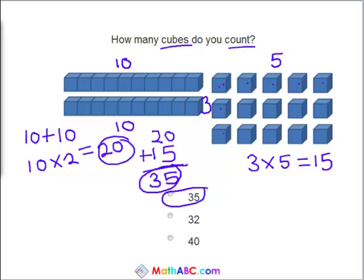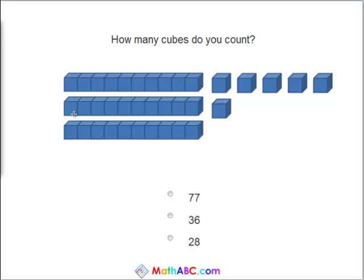Let's try another one. Okay, so the cubes that are stuck together we know are 10. We have 3 of them. So 10 plus 10 plus 10 or 10 times 3 equals 30. So there's 30 cubes right here and let's count these.